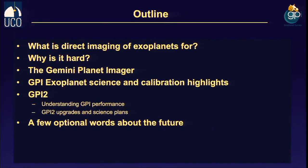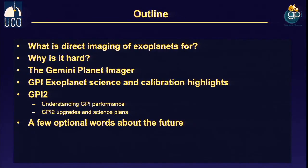I'll talk a little about direct imaging — why we want to do it, why it's hard. There's been a huge amount of work, including really brilliant stuff at Keck with KPIC by Dimitri's group, and work that Jean-Baptiste Ruffio, who just left here, has done with OSIRIS. But I'm mostly going to talk about the Gemini Planet Imager, the GPI exoplanet science campaign, and our plans for upgrading GPI into an instrument we're unimaginatively calling GPI-2.